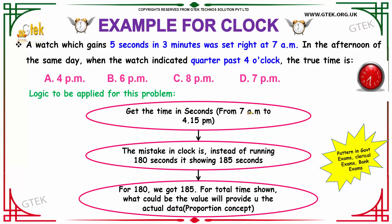The logic here is: first, you have to get the time between 7 and 4:15 — quarter past four o'clock is 4:15. Then calculate the time in seconds, then calculate the mistake in the clock — how much it is going fast. Next, calculate the time for which the mistaken seconds have been added. This is a proportion concept.